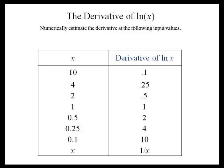Notice what's happening. f prime of 4 is 0.25 or 1 fourth. f prime of 2 is 1 half. f prime of 1 is 1. So it turns out f prime of x is 1 over x.